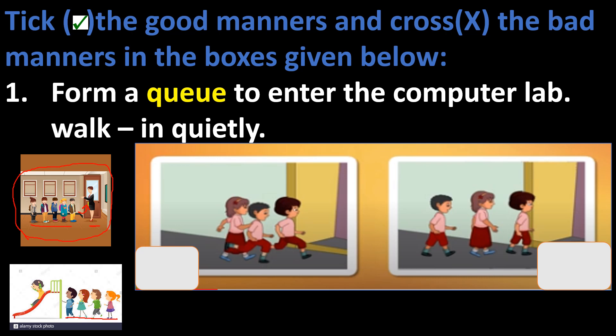Walk in quietly means while you are entering the computer lab, you need to be very quiet — don't talk with each other. See, these kids are not in a queue, so that is a cross. But these kids are in a queue, entering the computer lab, looking very sincere and walking quietly — so that is the right one. That is our first rule.